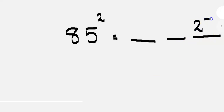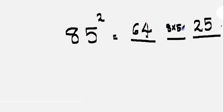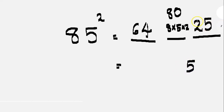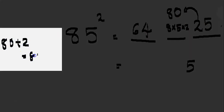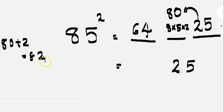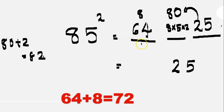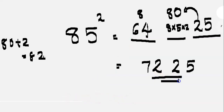5 square is 25. 8 square is 64. We multiply 8 into 5 into 2: 5 into 2 is 10, 8 into 10 is 80. We take the ones digit 0 and carry 8. Then we add 8 to 64: 64 plus 8 is 72. The answer is 7225.